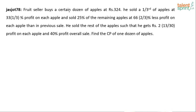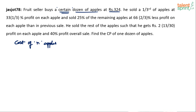A fruit seller has bought a certain number of dozens of apples. We don't know how many, but he bought some number of apples at rupees 324. Let's forget about 'dozen' as a multiplier and just consider n apples bought at rupees 324. We will find dozens by taking n divided by 12. He sold one third of the apples, which is n by 3.